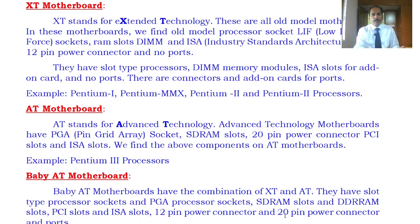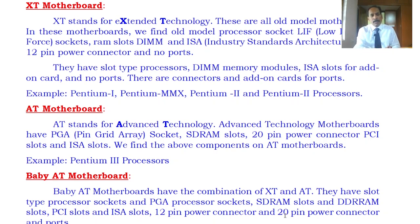Motherboards are classified just like the evolution of motherboards. Earlier we had older processors and motherboards that supported only limited features — no USB support, no graphics support. Today we support USB and graphics, and we can connect high-definition monitors. Just as computers went through evolution, the motherboard also went through evolution. Starting with Pentium 1, today we have i3 and i7 processors, and depending on the processor, we have different types of motherboard.